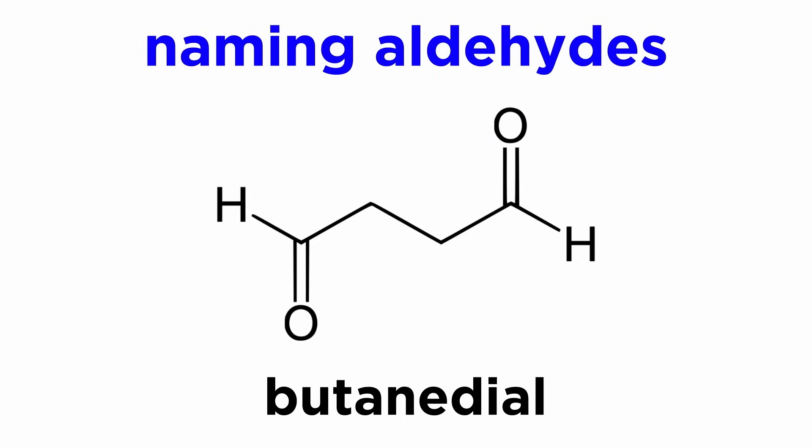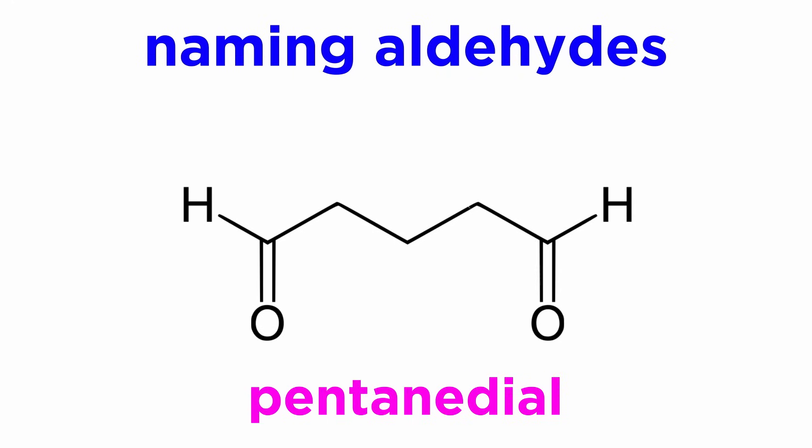If two aldehyde groups are present, we can specify the number of carbons in the molecule and use the suffix -dial, since the carbonyls must necessarily be on the two ends of the molecule. So this is butanedial, and this is pentanedial.